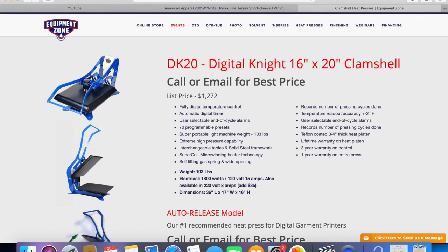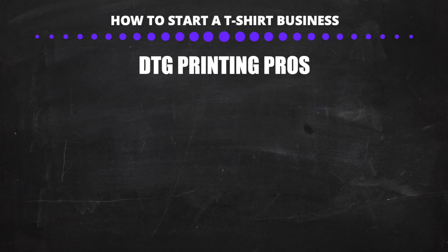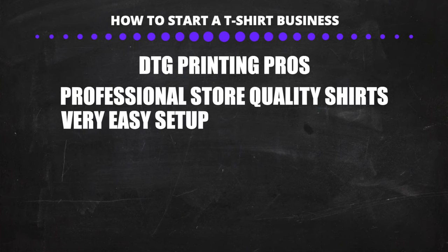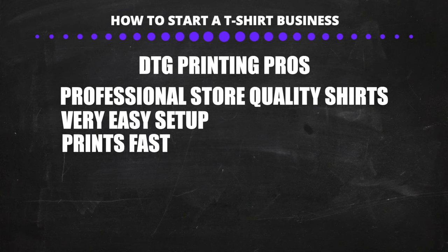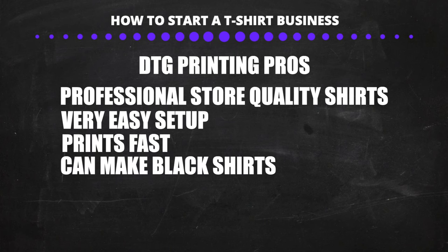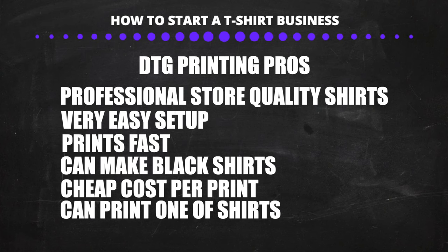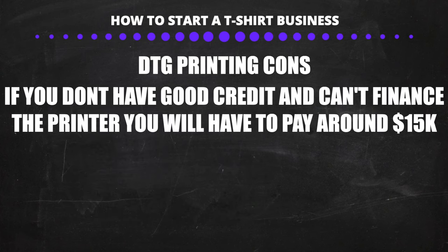If you buy a DTG printer, I really suggest you get a real professional heat press, which costs around $1,000. Let's talk about the pros and cons of DTG printing. The pros are: it prints professional quality, very high detail, it's easy to set up and print, it's very fast, you can make black t-shirts with white ink, the cost to print is very cheap, and you can make one-off t-shirts. The con is if you have bad credit, it's going to be expensive.